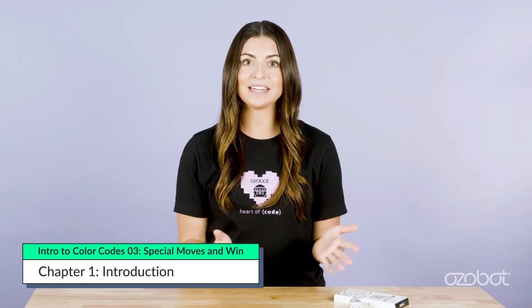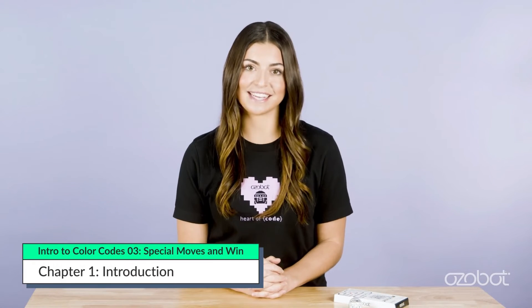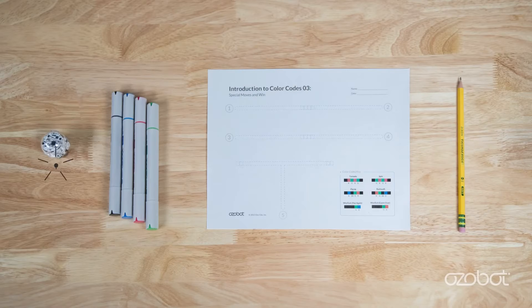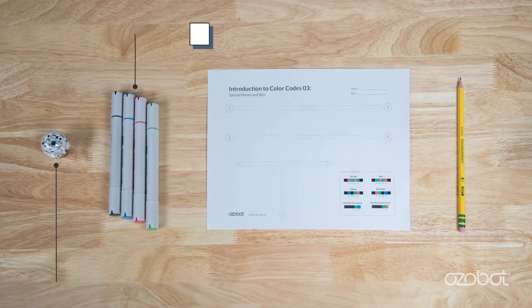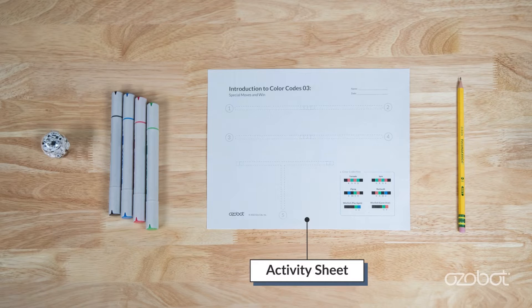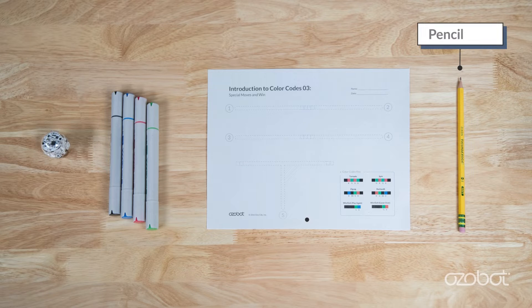You can program Ozobot to express itself with movement, sound, and lights. Today you'll explore how the special moves in the win/exit color codes can be used to help Ozobot perform different actions. You will need an Ozobot fully charged and calibrated, color code markers, the intro to color codes three special moves in win activity sheet, and a pencil.